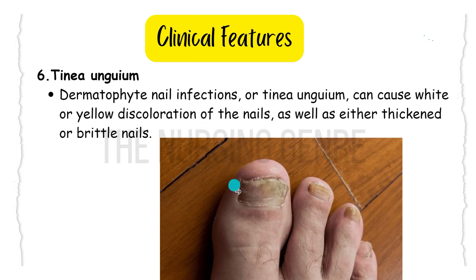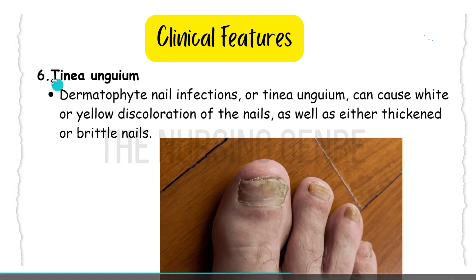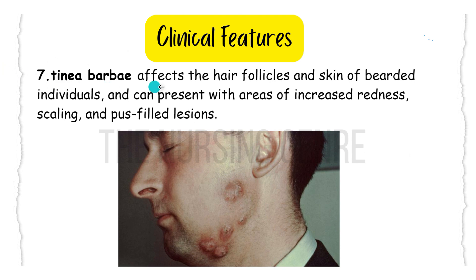Tinea unguium causes nail infections and can cause white or yellowish discoloration of the nails, as well as either thickened or brittle nails — where the toenails appear as though they are about to fall off.